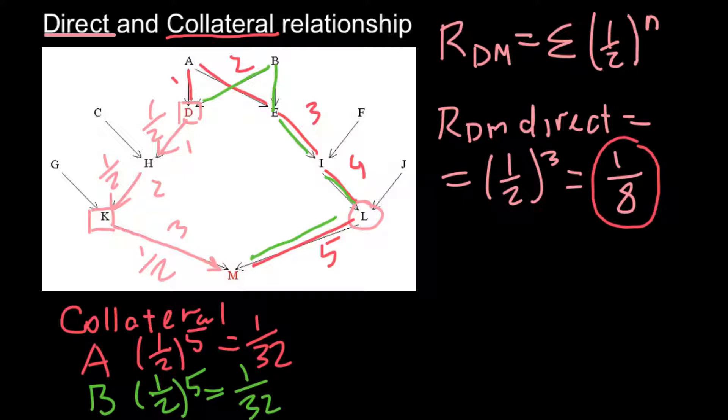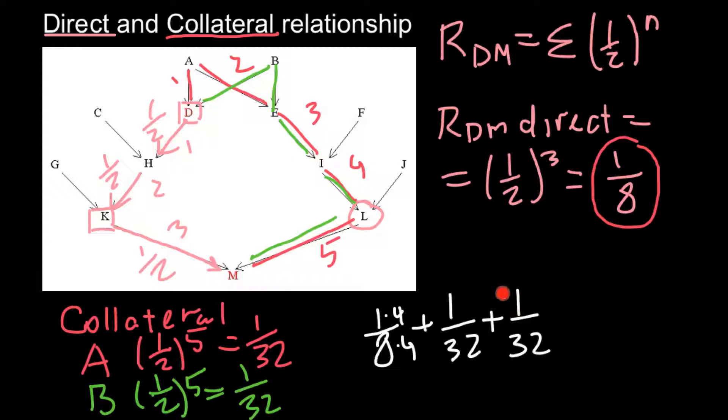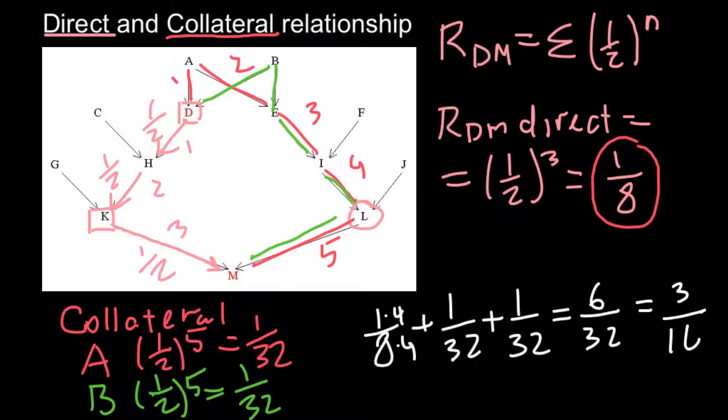So basically we have to add one eighth, which is direct relationship, plus one over 32, plus one over 32. In order to add these numbers, denominator have to be the same. So we have to multiply this number by four, both numerator and denominator. And we are going to get here four plus one plus one would be six over 32. Or we can reduce this number and divide by two. And the final answer would be 3 sixteenths.